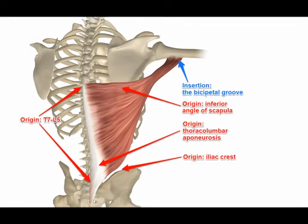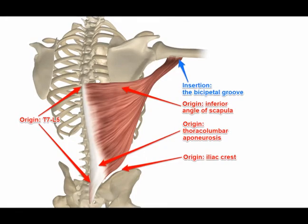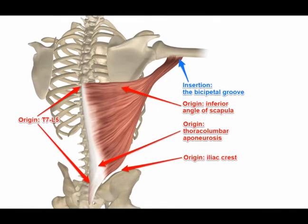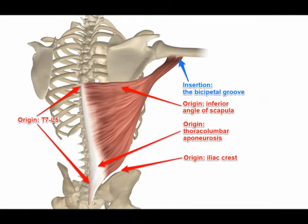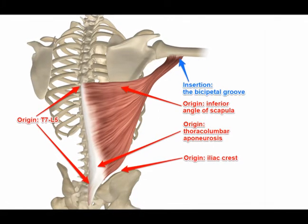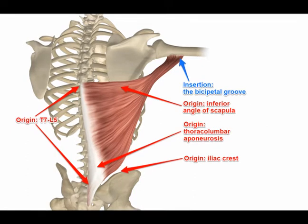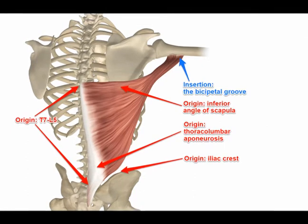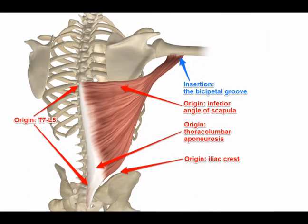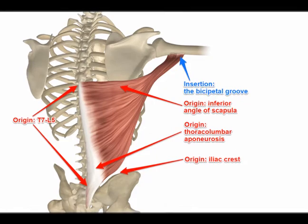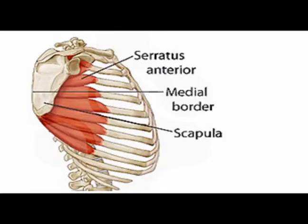Depression of the scapula is caused by a concentric contraction of the latissimus dorsi, the serratus anterior, the pectoralis major, the pectoralis minor, and the lower trapezius muscles.